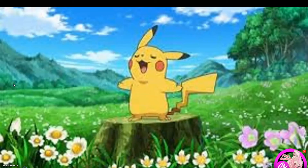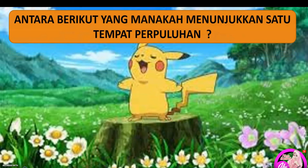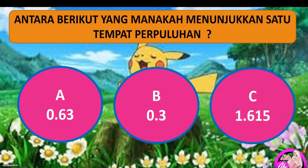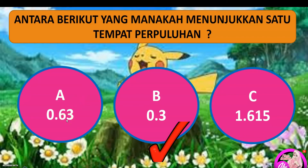Sekarang kita lihat contoh soalan: antara berikut yang manakah menunjukkan satu tempat perpuluhan — A, B, atau C? Jawapan dia adalah B, kerana selepas titik cuma ada satu nombor, itu maksudnya satu tempat perpuluhan. Jawapan A adalah dua tempat perpuluhan dan C adalah tiga tempat perpuluhan.